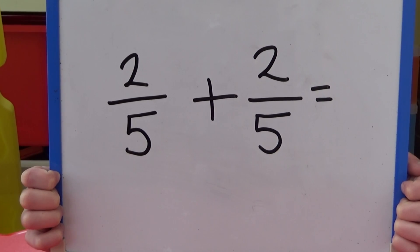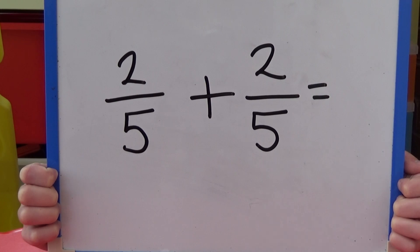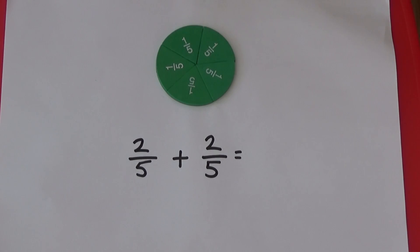First, we're going to add two fifths and two fifths. As the denominator is five, we need to look at our fraction circle, which is split into fifths or five equal parts.